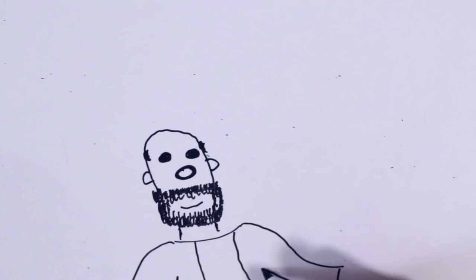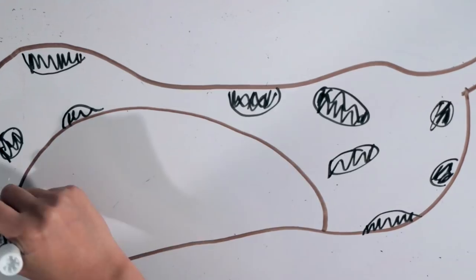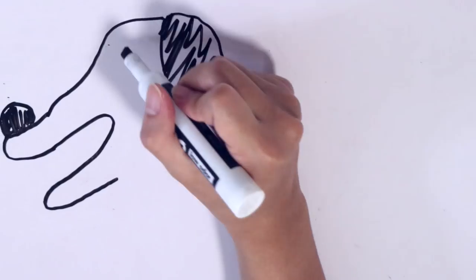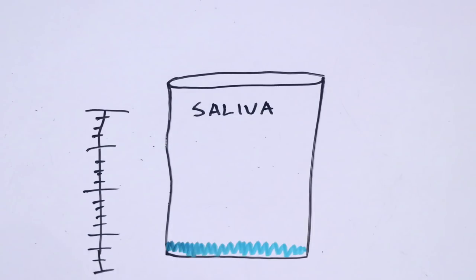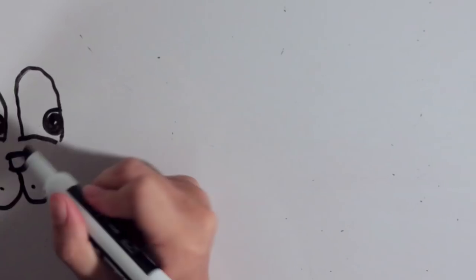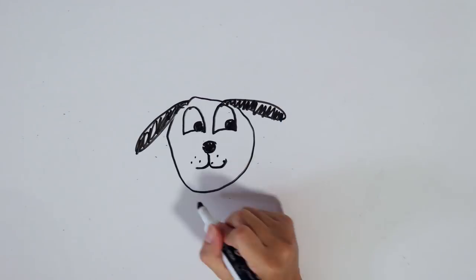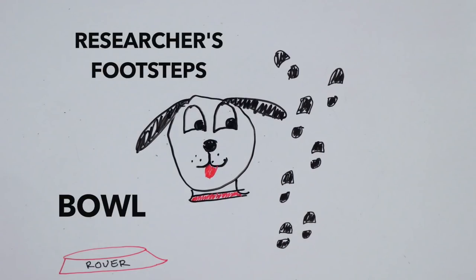So there was this Russian scientist named Ivan Pavlov, and he discovered this by accident. He kept dogs in a lab so he could study their digestive processes. Now, dogs naturally salivate to food. He surgically implanted devices in the dogs' mouths so he could measure their saliva. But experiment after experiment, Pavlov noticed that before the food was even presented, the dogs began to salivate — to the sound of the researcher's footsteps, or even just to the bowl itself.